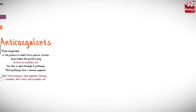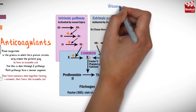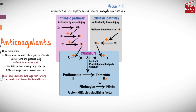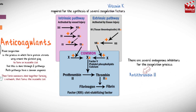There are two important pieces of information you should know. Vitamin K is required for the synthesis of several coagulation factors. There are also several endogenous inhibitors for the coagulation process; the most important one is antithrombin 3, which binds to thrombin and to factor XA and deactivates both of them.